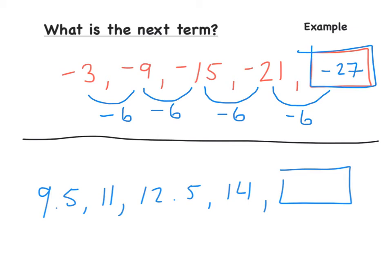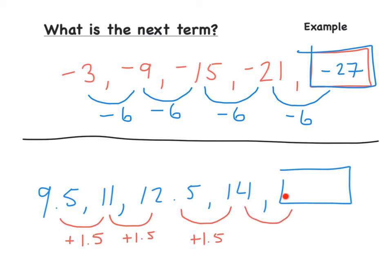Pause the video and try the one at the bottom, then unpause when ready. From 9.5 to 11, we add 1.5; 11 to 12.5, add 1.5; 12.5 to 14, add 1.5. So from 14 to the next term, we add 1.5 again: 14 plus 1.5 equals 15.5.